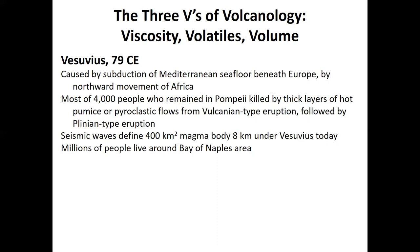Current seismic surveys define a 400 cubic kilometer magma chamber eight kilometers under Vesuvius today. Millions of people live in the Bay of Naples area — the same region impacted by the 79 CE eruption. The longer a volcano goes without erupting, the more the local population is lulled into a false sense of security. Over time, as generations pass, fear dissipates and the volcano becomes more hazardous as the guard is let down.